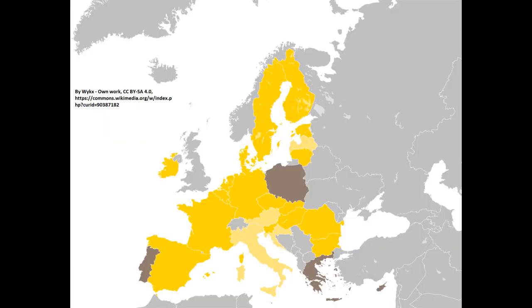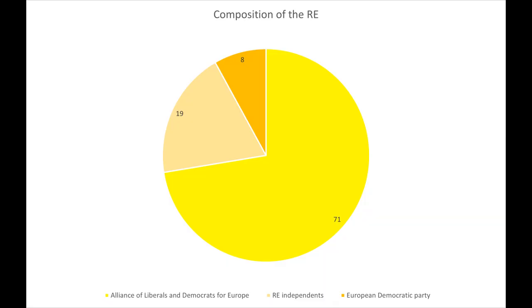Renew Europe has 98 MEPs from all EU states, with the exception of Portugal, Malta, Poland, Greece, and Cyprus. Some of the national parties present in Renew Europe include Anno 2011 of the Czech Republic, Venstre of Denmark, La République En Marche and the Democratic Movement of France, the Free Democratic Party of Germany, the People's Party for Freedom and Democracy of the Netherlands, USR Plus of Romania, and the Citizens Party of Spain. It is headed by Romanian Dacian Cioloș. Most of its members are part of the Alliance of Liberals and Democrats, with 71 MEPs affiliated, 19 are independents, and the remaining 8 are part of the European Democratic Movement.